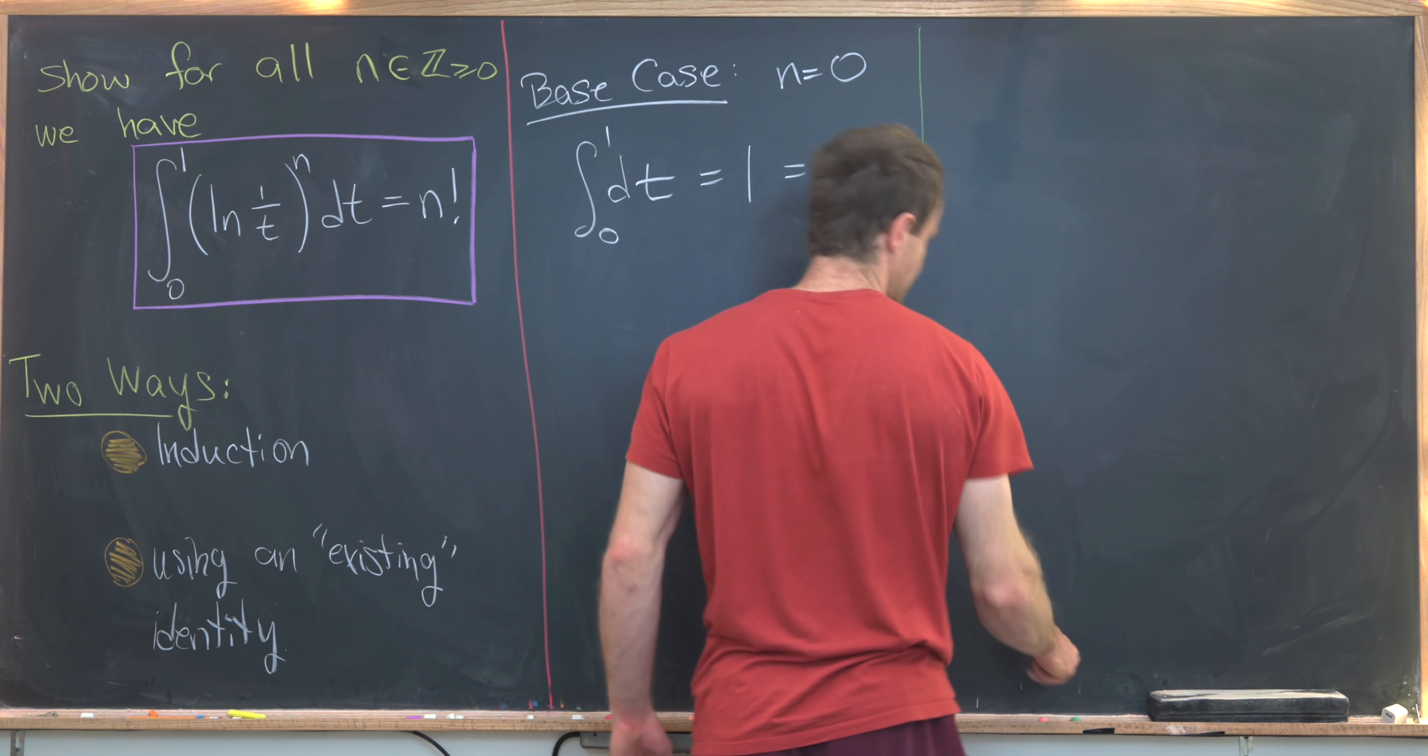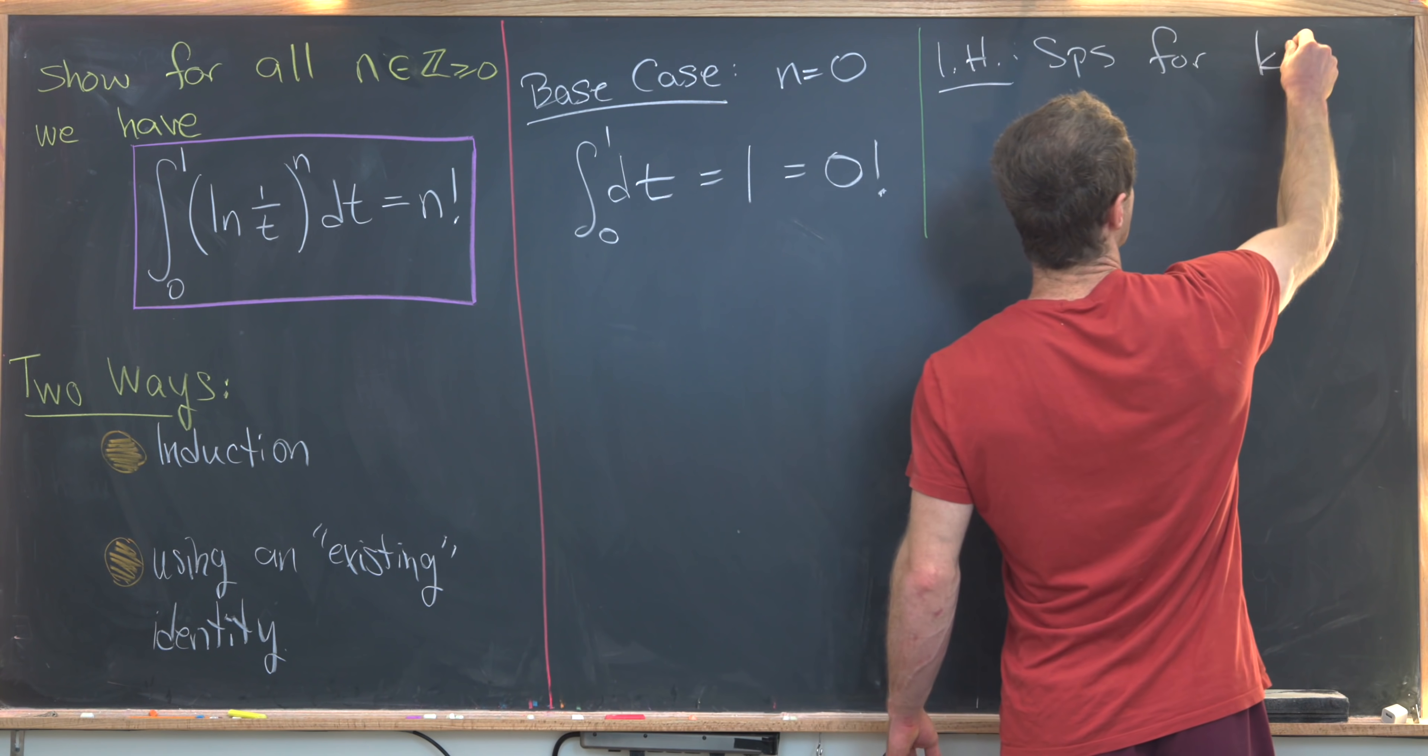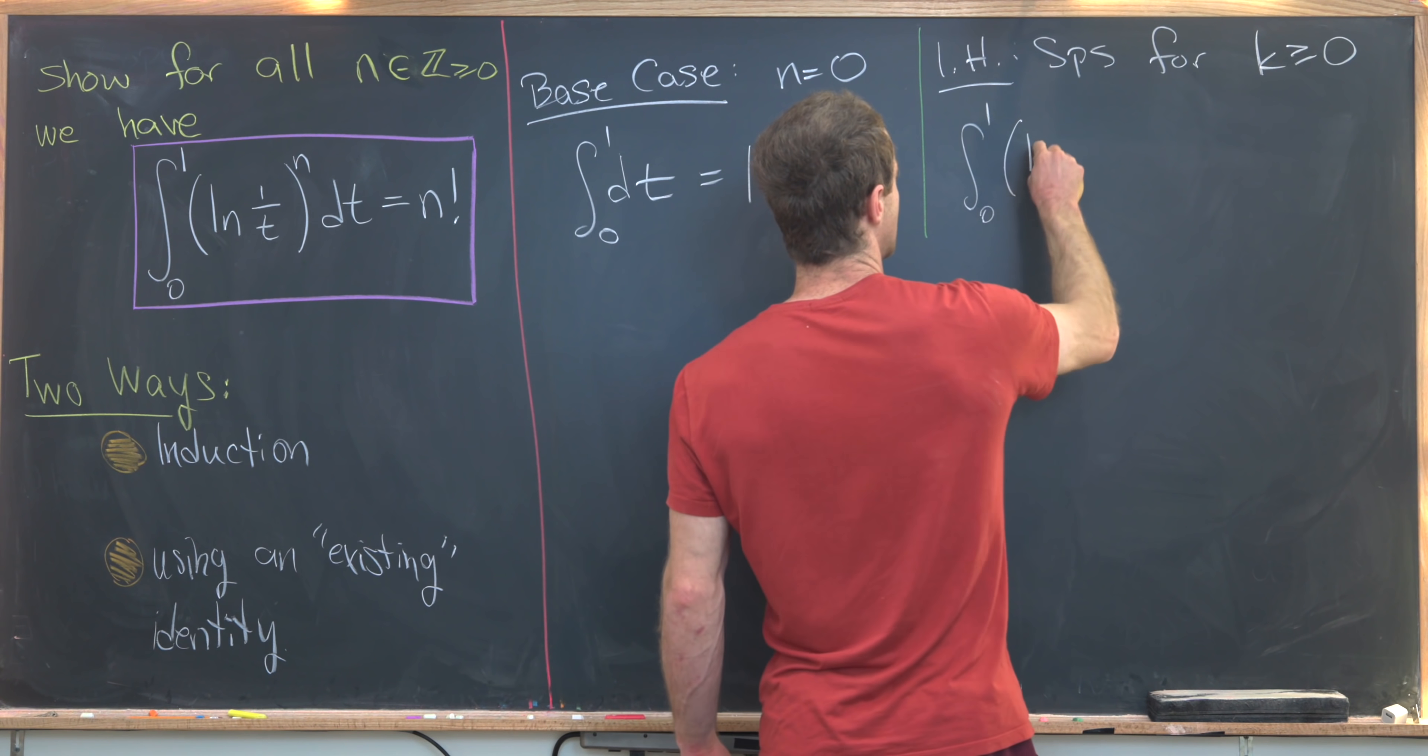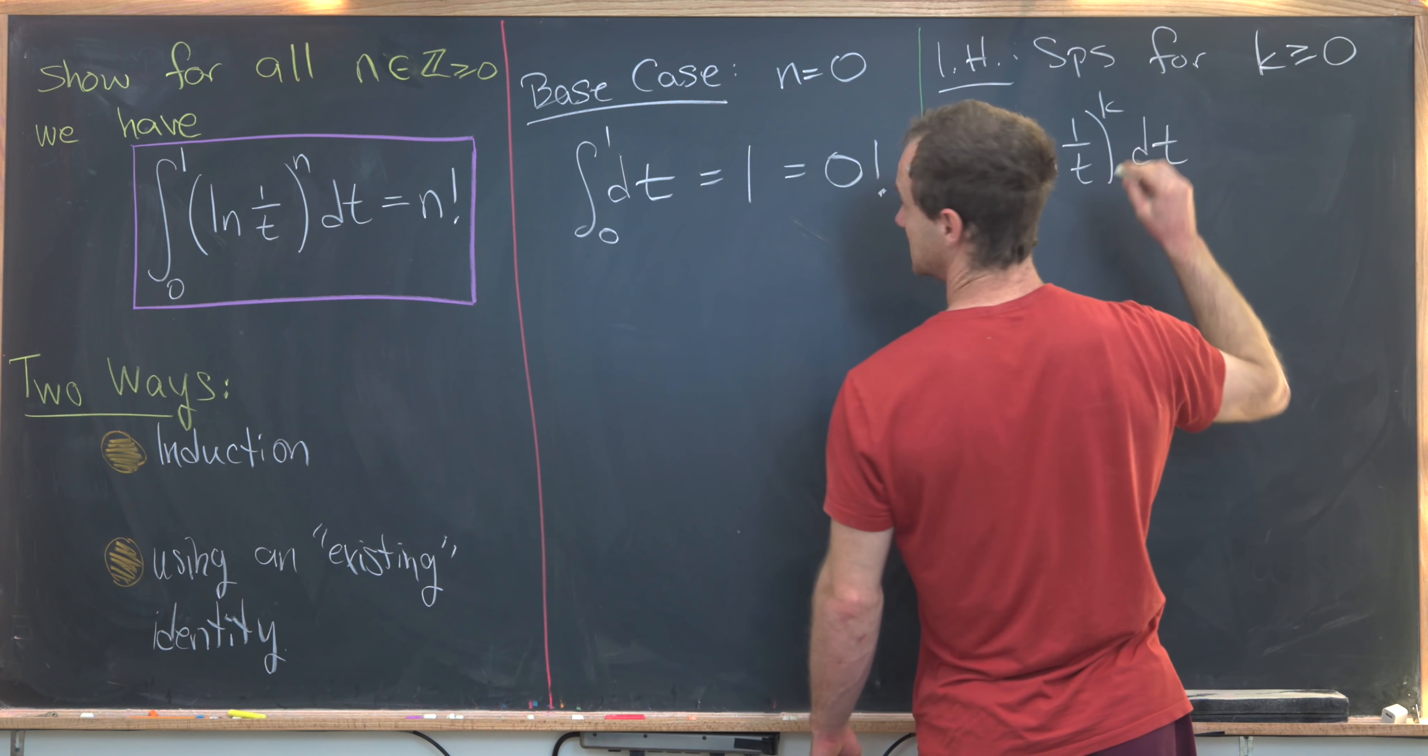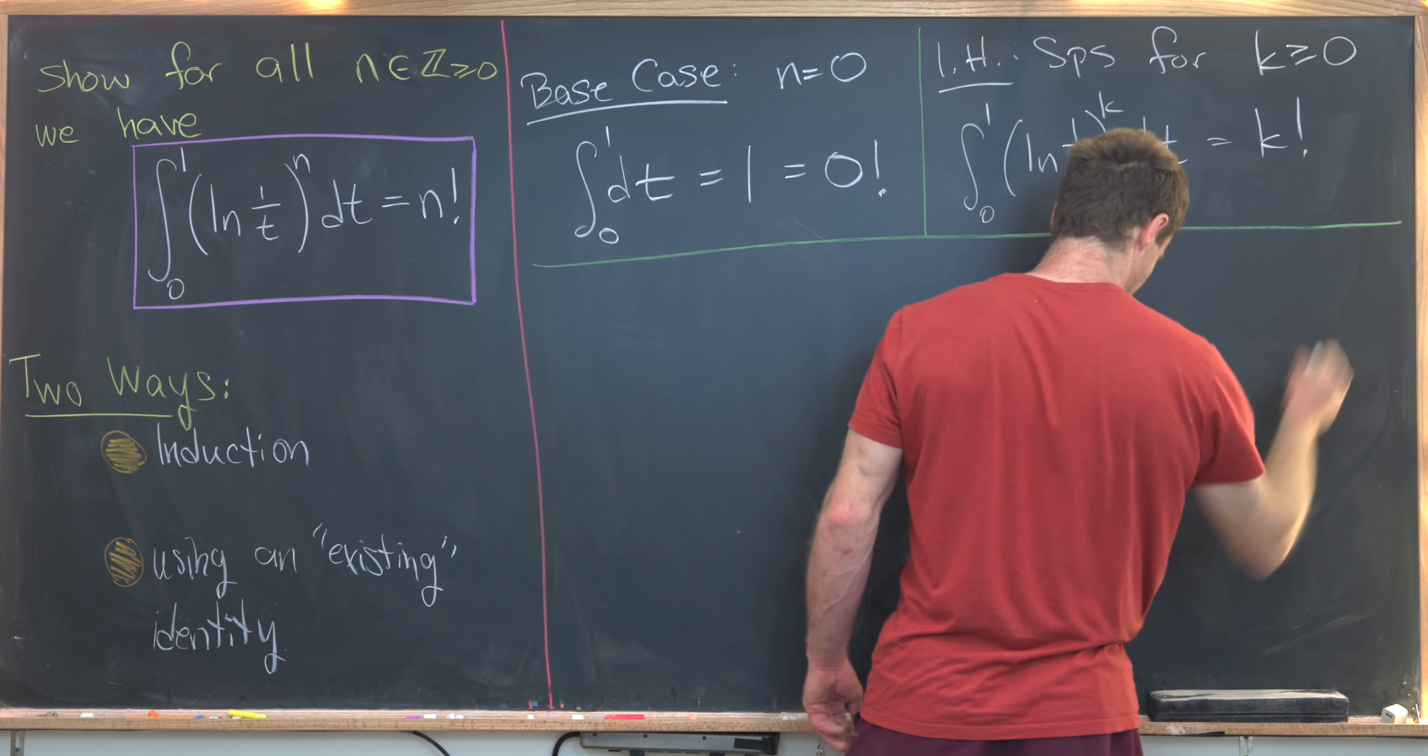Next, we'll make our induction hypothesis. So let's suppose for some k greater than or equal to 0, we know that the integral from 0 to 1 of natural log of 1 over t to the k dt is equal to k factorial. So that should nicely set up our induction.